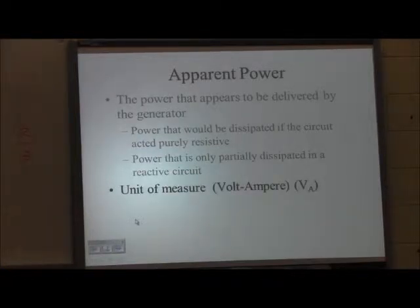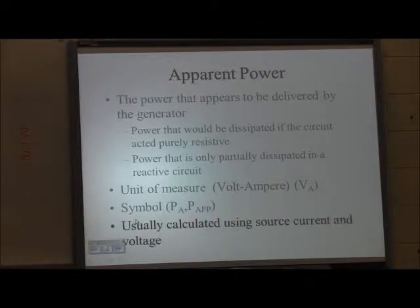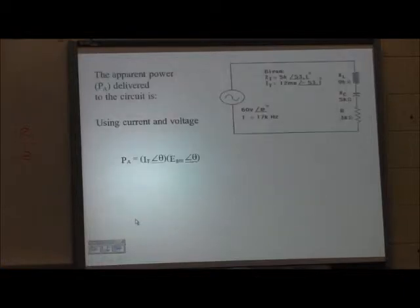Only a resistor in the form of heat and light uses power. Real power, true power. So apparent power, power everywhere is additive. Why? Because voltage is additive in series, and current is additive in parallel.